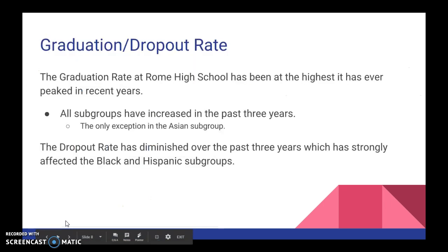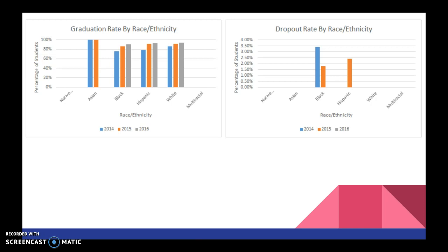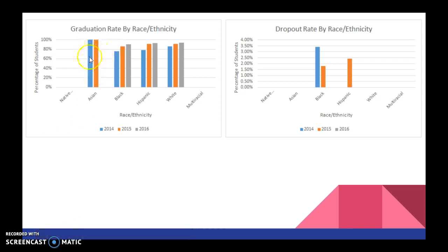As far as the graduation and dropout rate, the graduation rate of Rome High School has been the highest it has ever peaked in recent years. All subgroups have increased in the past three years, with the only exception being the Asian subgroup due to the limited number of students. The dropout rate has diminished over the past three years, which has strongly affected the black and Hispanic subgroups. Looking at the tables, the Asian population has achieved a 100% graduation rate the past two years, and in 2016 we had essentially no students in the dropout rate.